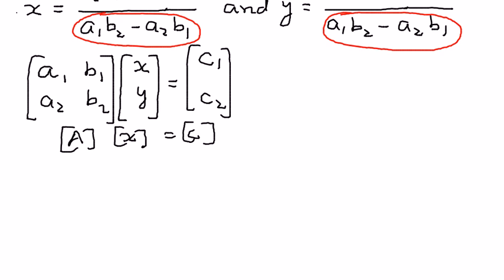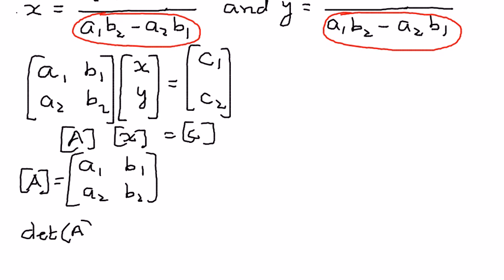So the A matrix here is the coefficient matrix. The coefficient matrix is a1, b1, a2, and b2. This is called the coefficient matrix. And to find the determinant of A, we can write that as det(A), or sometimes it is also written out as A with two lines on the side like that. This is read as determinant of A, which can also be represented this way.